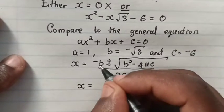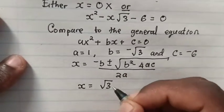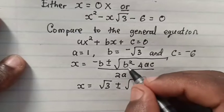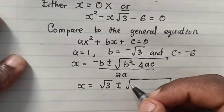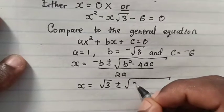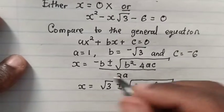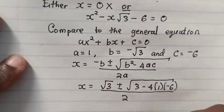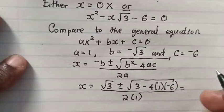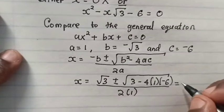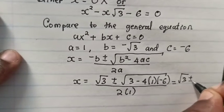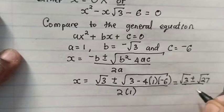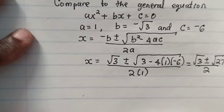So x equals — since b is negative √3, minus b is positive √3 — plus or minus √(b² minus 4ac), where b² is (√3)² which is 3, minus 4 times a which is 1 times c which is minus 6, all divided by 2 times a which is 1. So we get √3 plus or minus √(3 + 24), which is √27, all divided by 2.